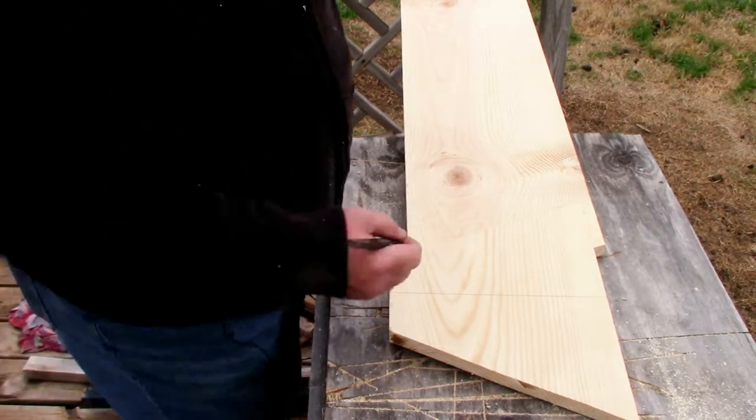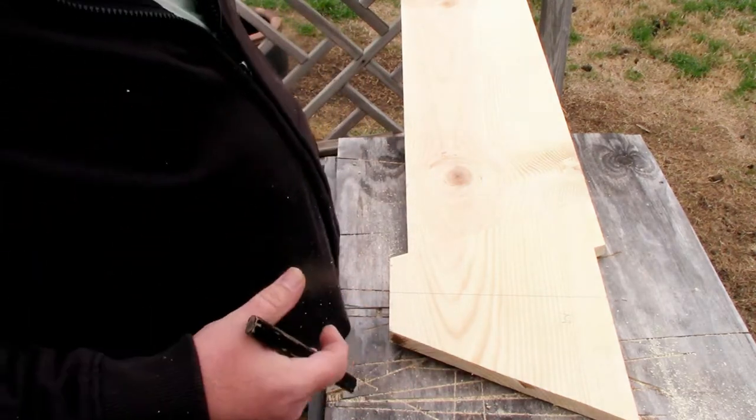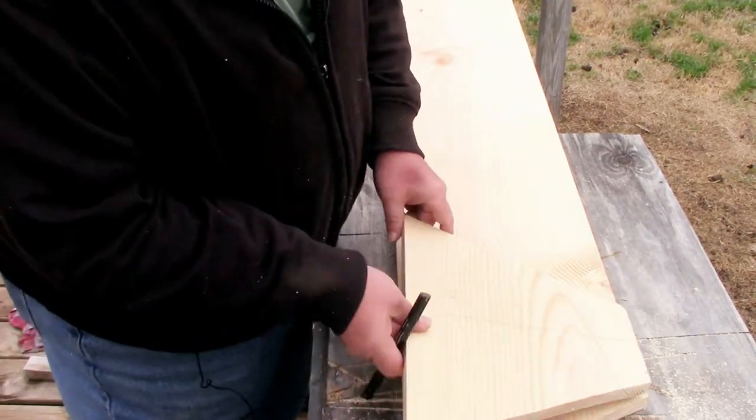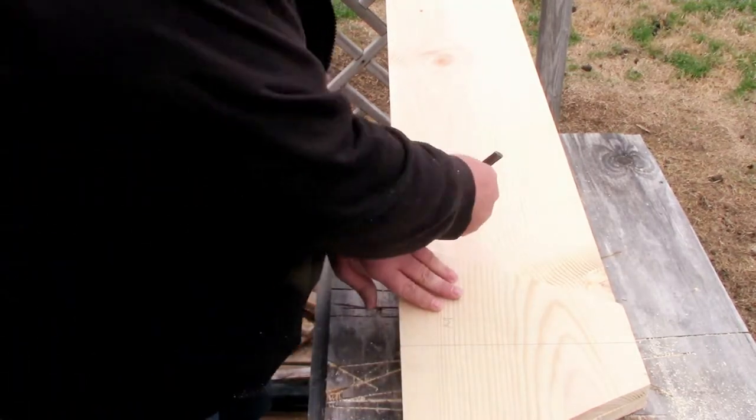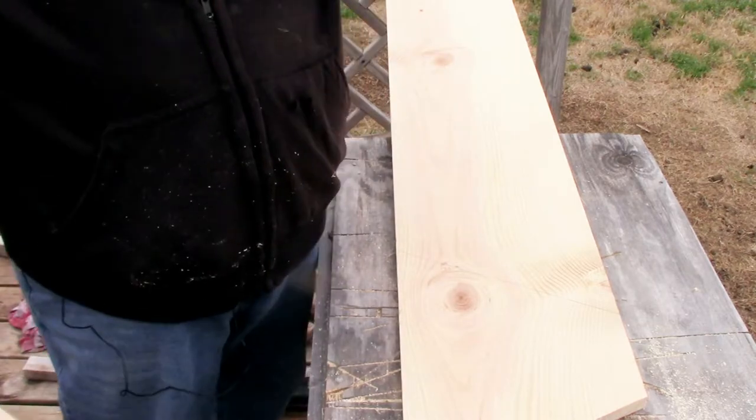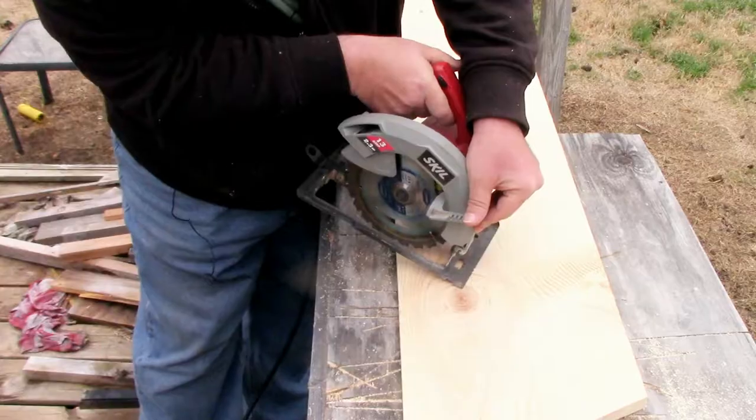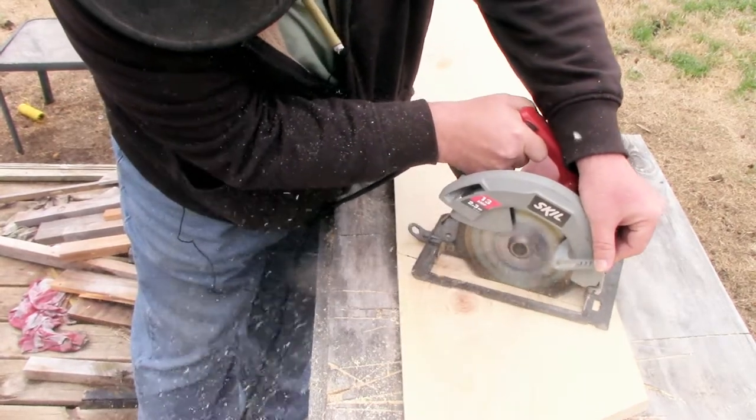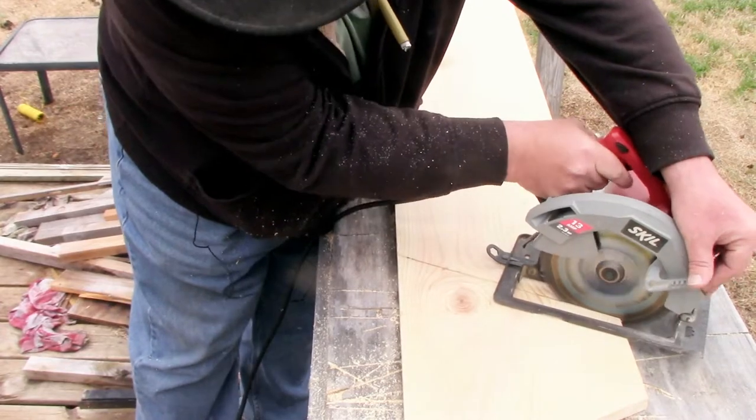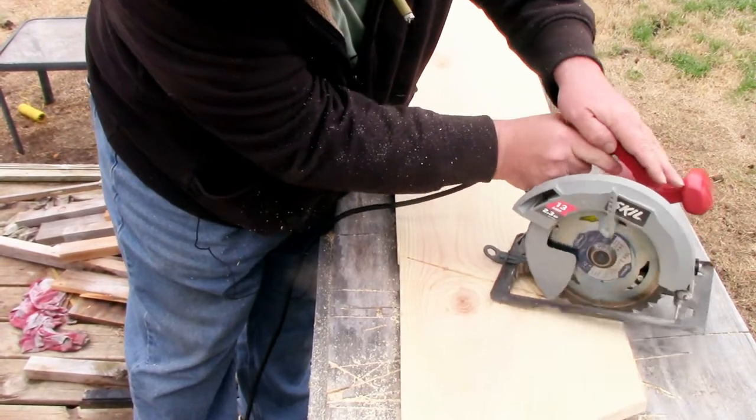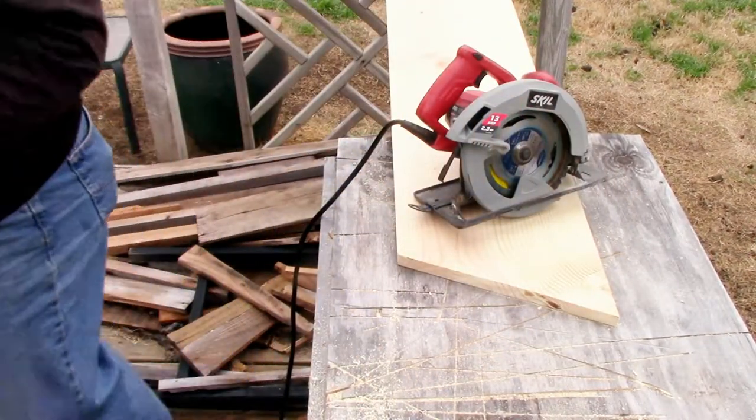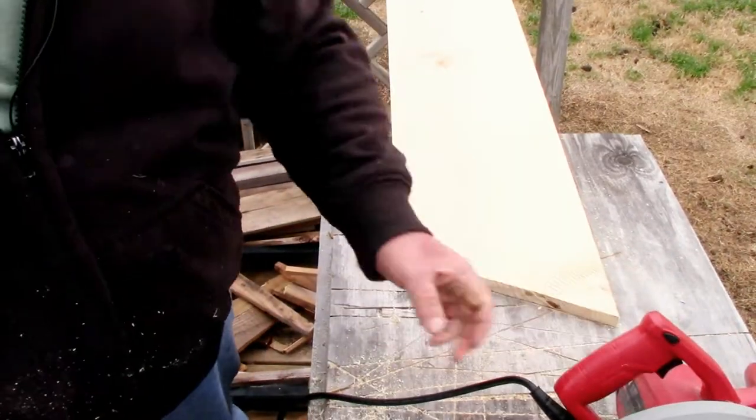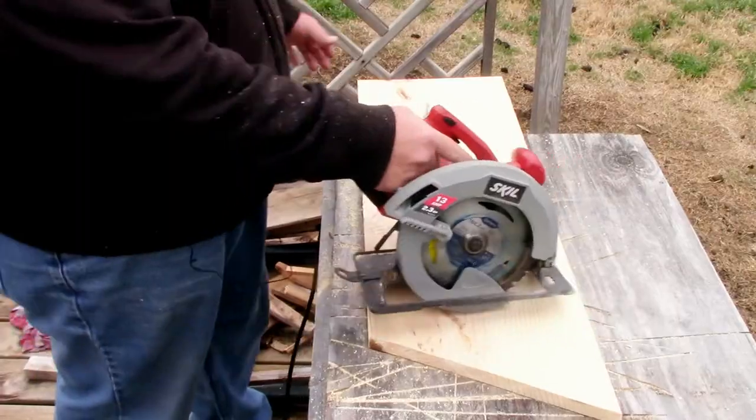We now have our master end board cut. Since we will be marking these using a single board to mark it, I'm going to mark this as master. Slide this board forward, turn this around, and we get our second board, but we only have to cut one side.